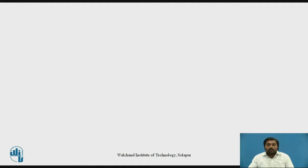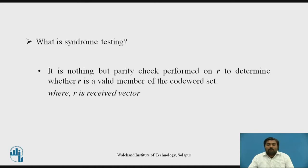Before starting with the actual session, let's pause and think about what is meant by syndrome testing. If you remember from the previous slides, we already studied syndrome testing in linear block codes. Syndrome testing is the parity check performed on R, the received vector at the receiver side when you transmit the codeword U through a channel in a communication system. Parity check is performed on that received vector to determine whether R is a valid member of the codeword set transmitted from the transmitter through a channel.